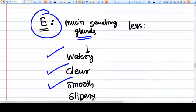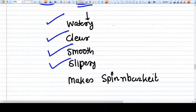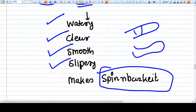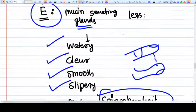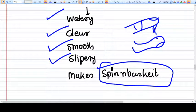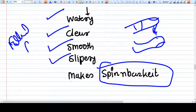This discharge can make a spinnbarkeit. For example, this is a finger, this is a thumb, you can actually stretch that discharge. So this is called spinnbarkeit. This thing is seen under estrogen influence, that means this is a follicular period and there is no ovulation yet. So this thing is considered safe.